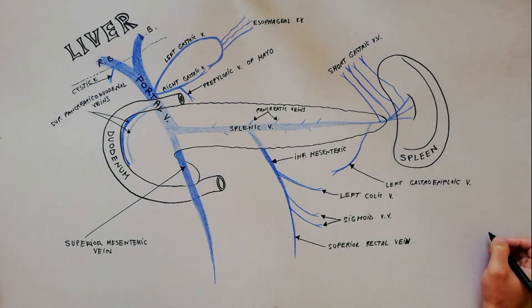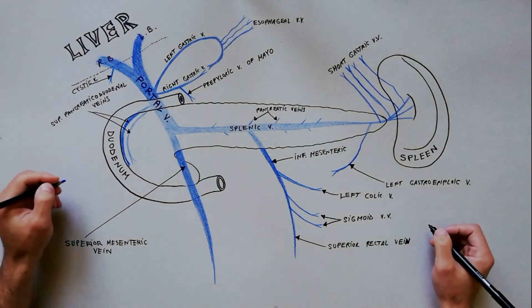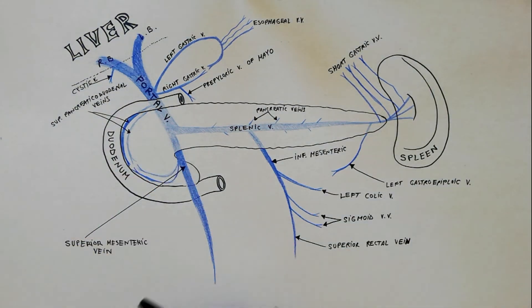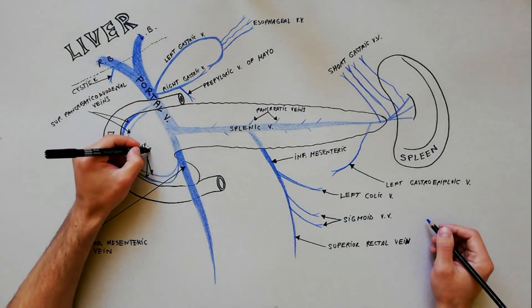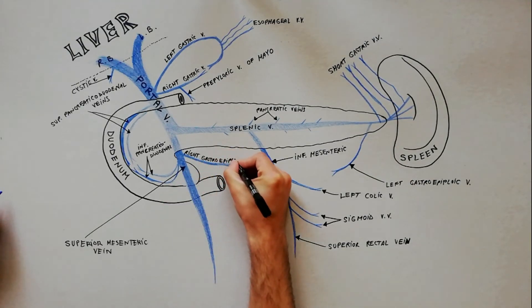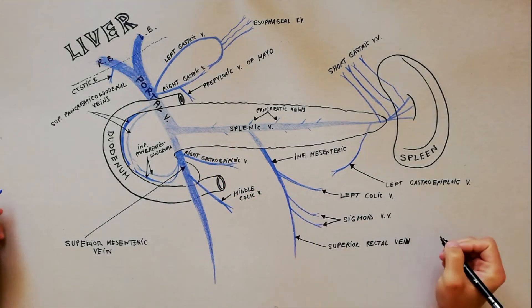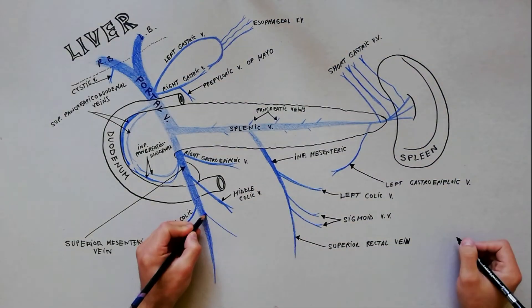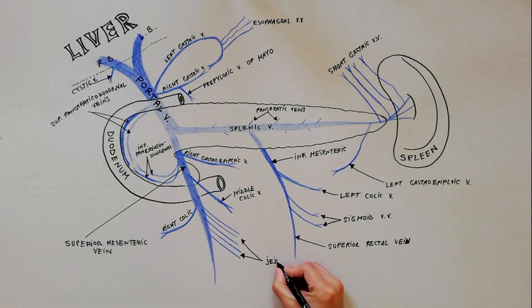Finally, the superior mesenteric vein receives numerous tributaries, like the inferior pancreaticoduodenal veins, right gastroepiploic vein, middle colic vein, right colic vein, numerous jejunal and ileal veins, and the ileocolic vein.